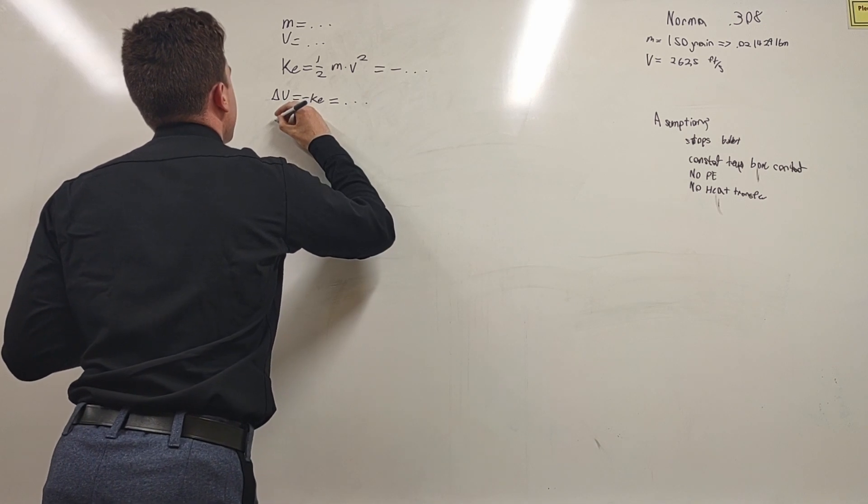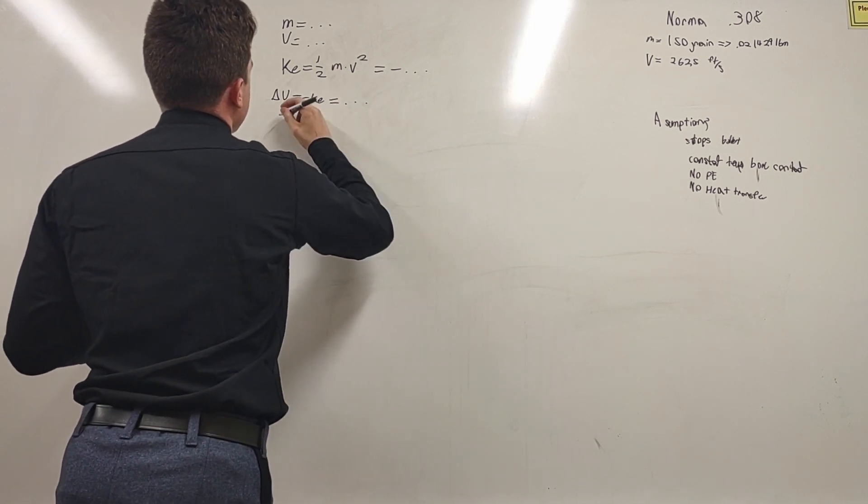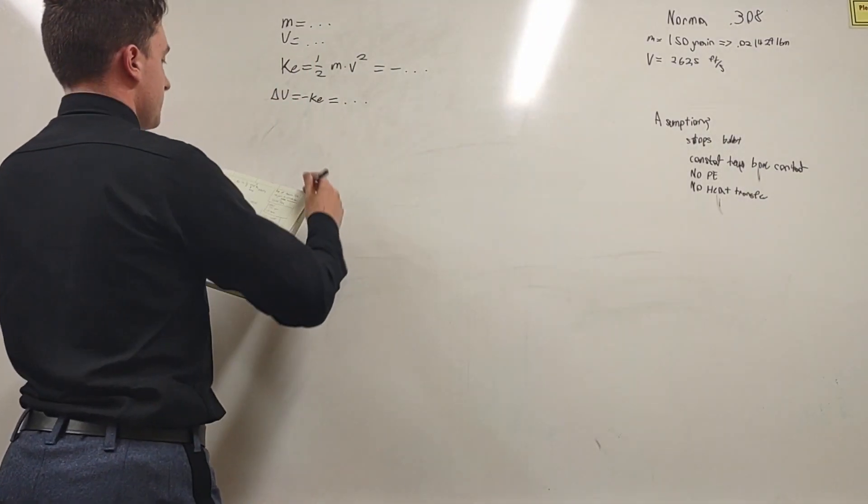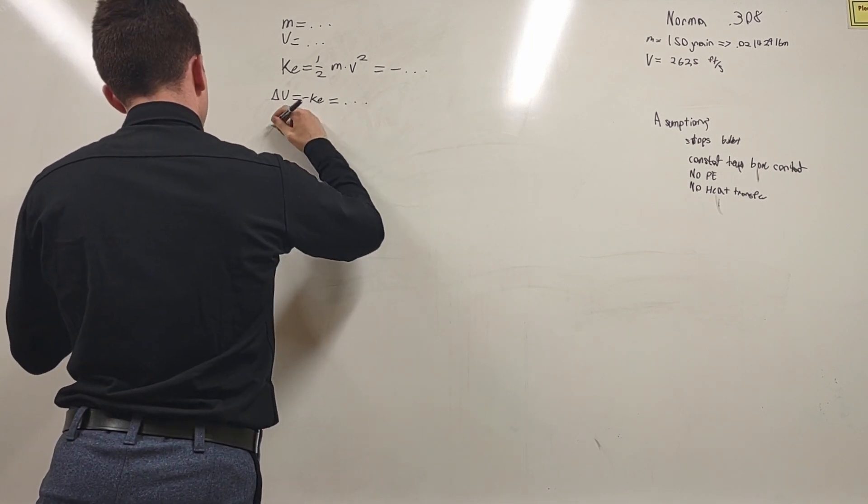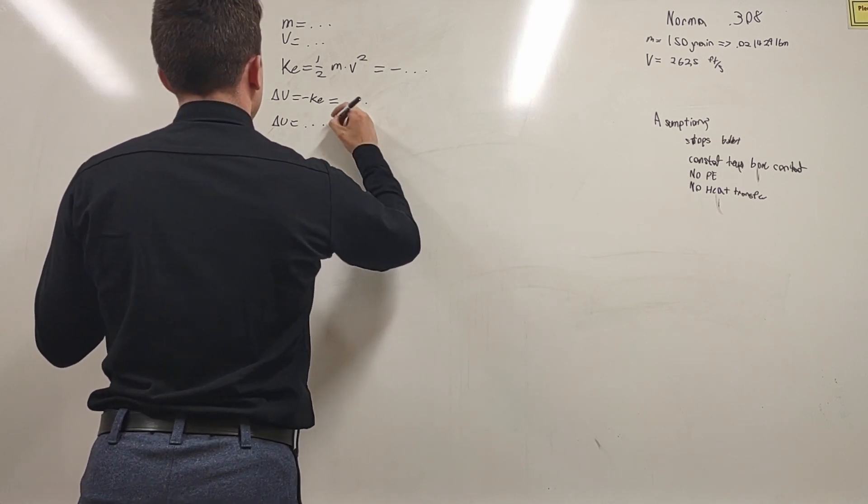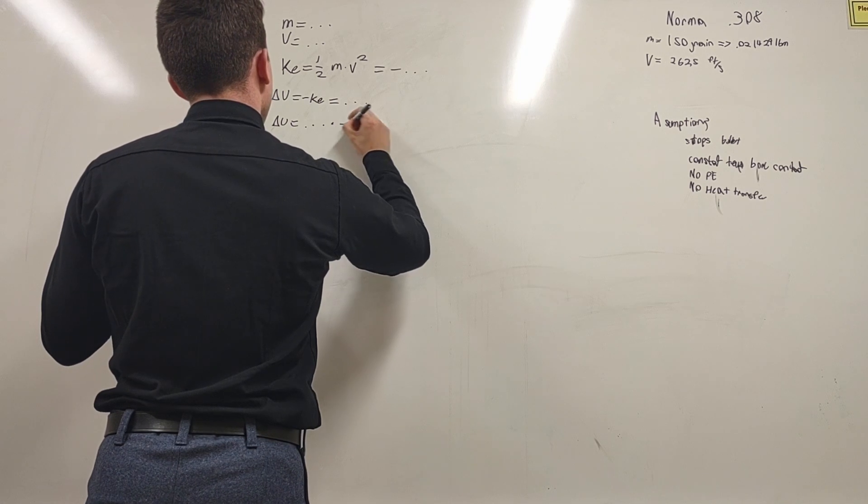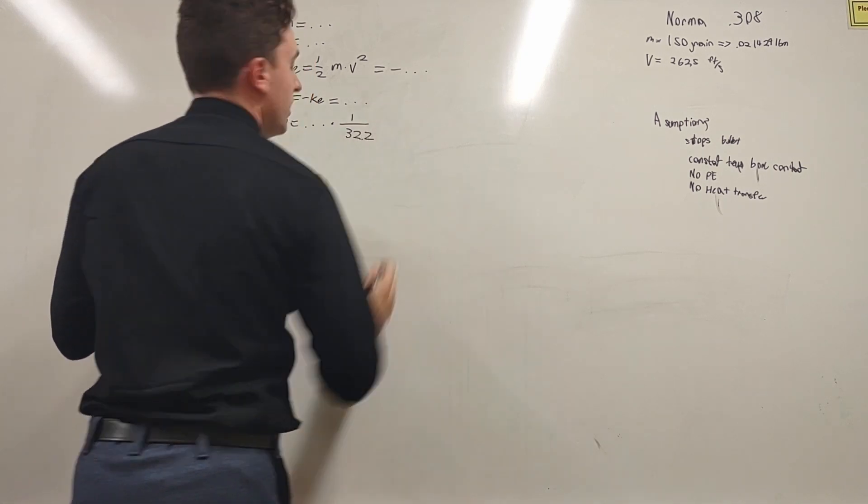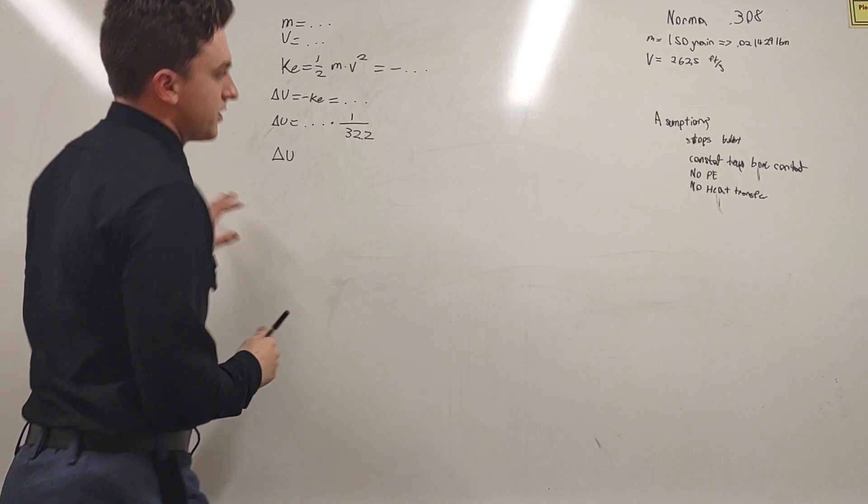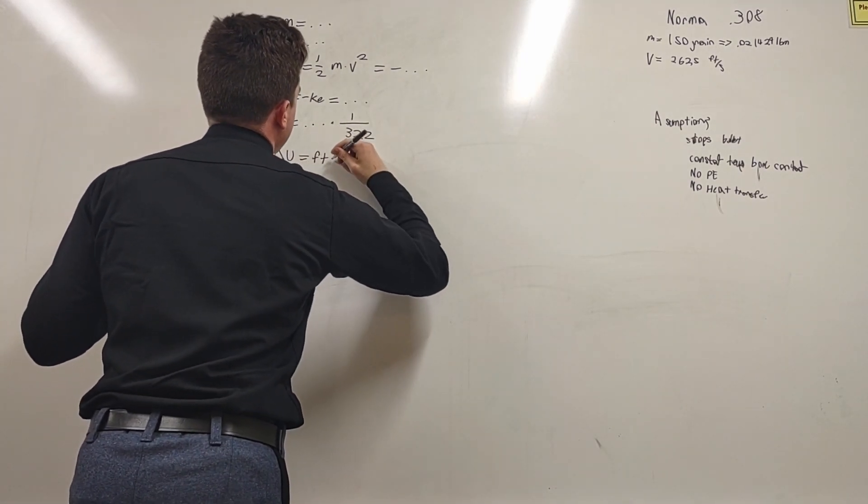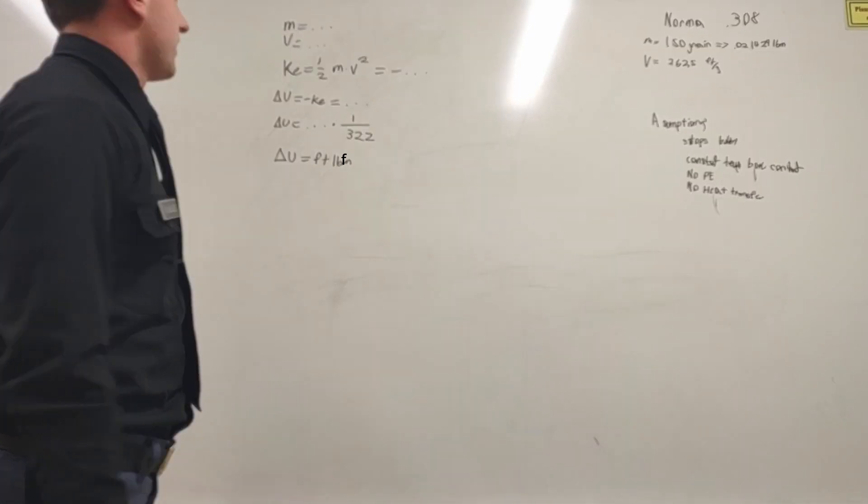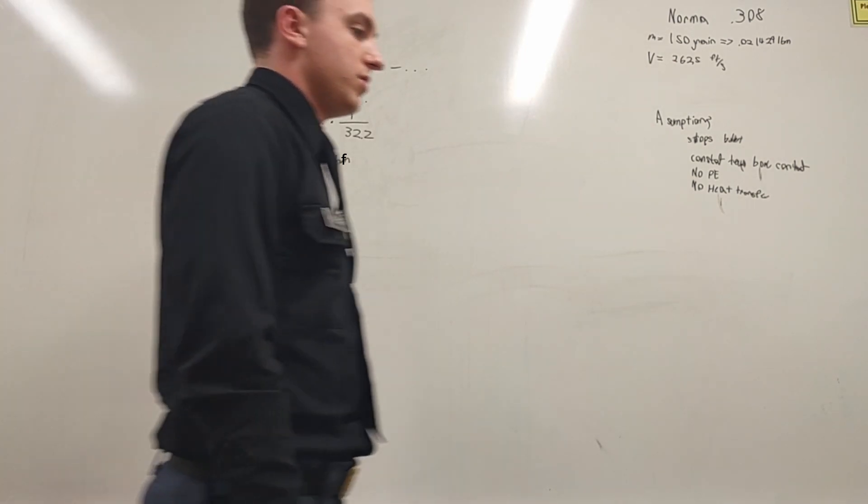And then what you want to do is you want to take that - you've got some nasty units in there. Then you want to multiply that times 1 over 32.2. That will get rid of your nasty units, and that will wind up with delta U, or what you're looking for, equal to foot pounds. That's the steps to find the foot pounds that your bullet puts onto the target.